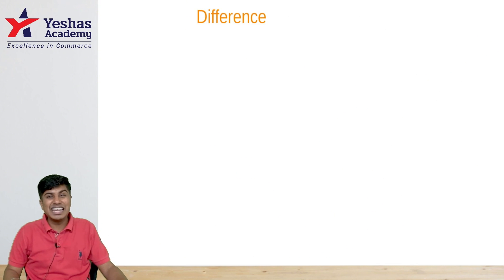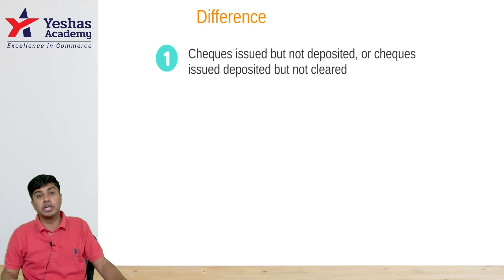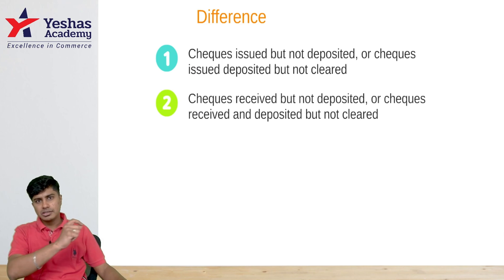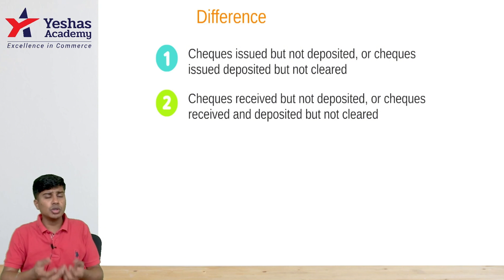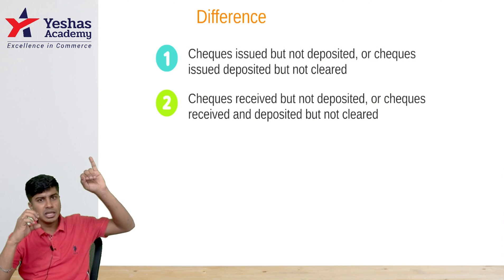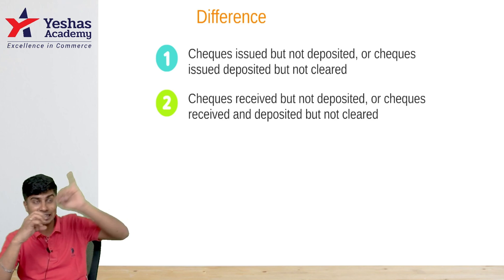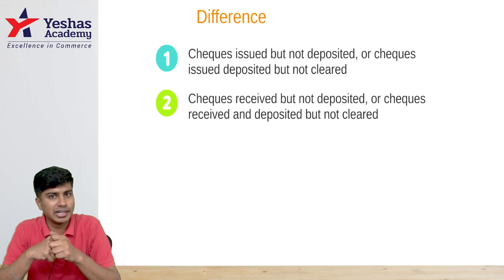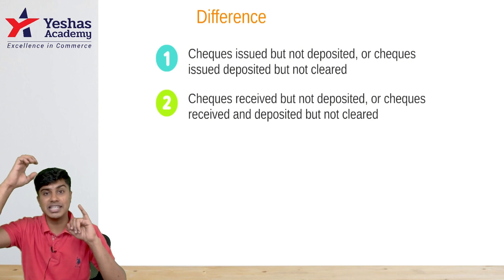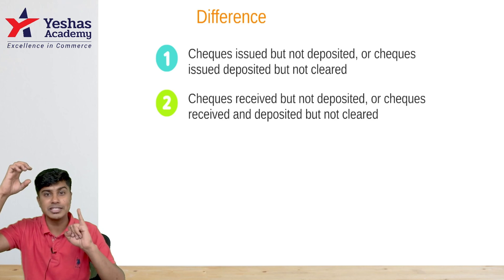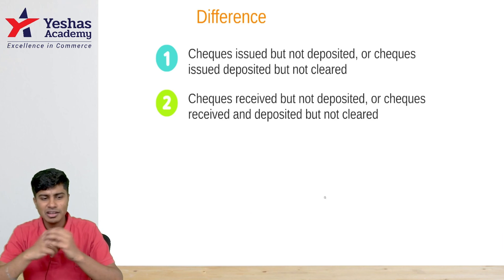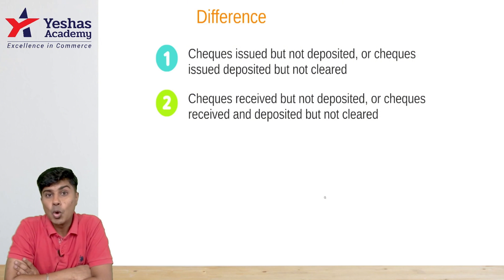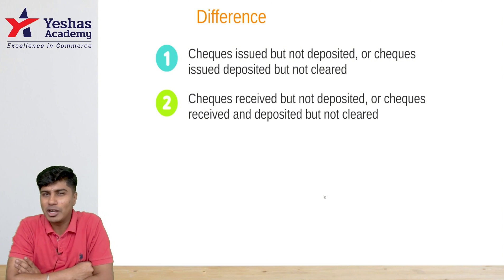The differences between passbook and cashbook arise because of checks issued but not cleared, and checks received and deposited but not cleared. When a check is issued, you enter it in your cash book reducing your cashbook balance, but the passbook balance is not yet decreased, leaving a difference. Similarly, when a check is received and deposited but not cleared, the cashbook balance increases but the passbook balance does not, creating another difference that we add or deduct depending on whether we start with the cashbook or passbook.